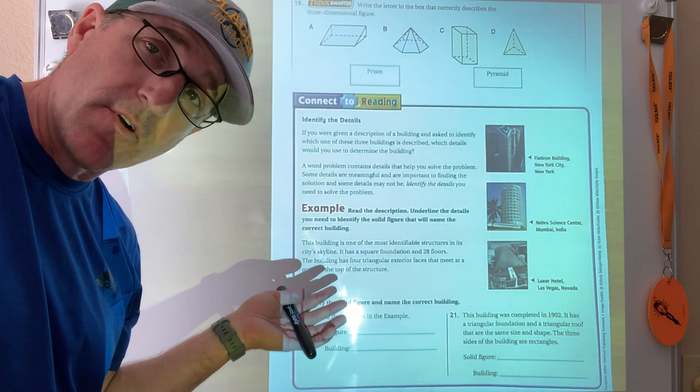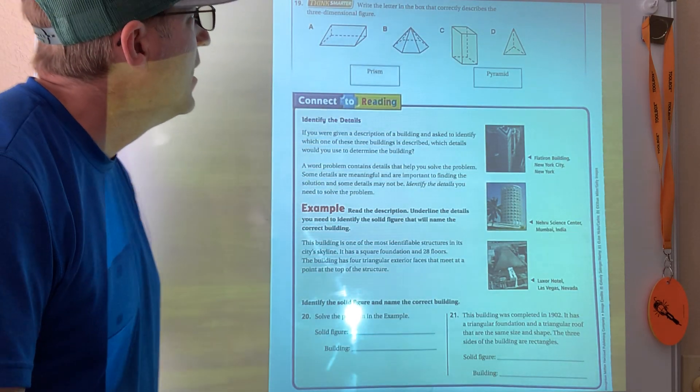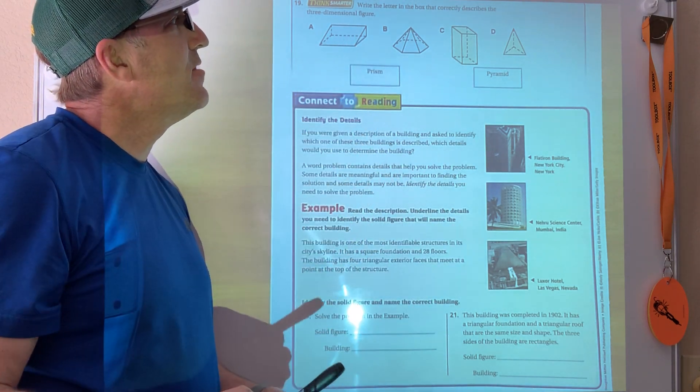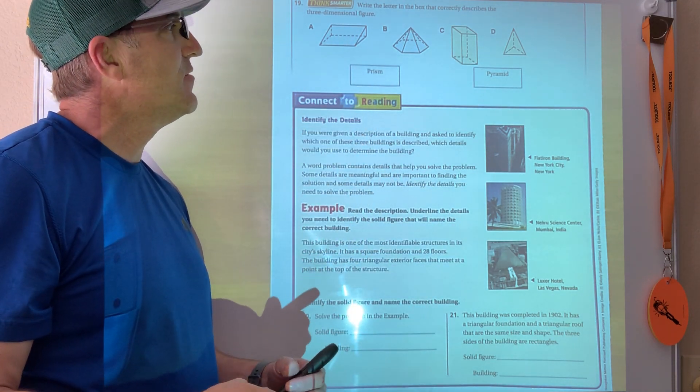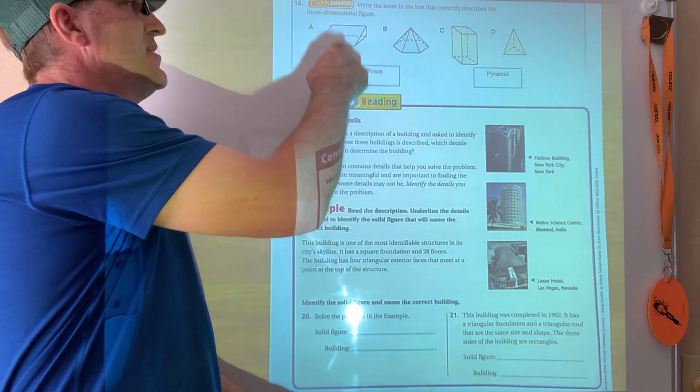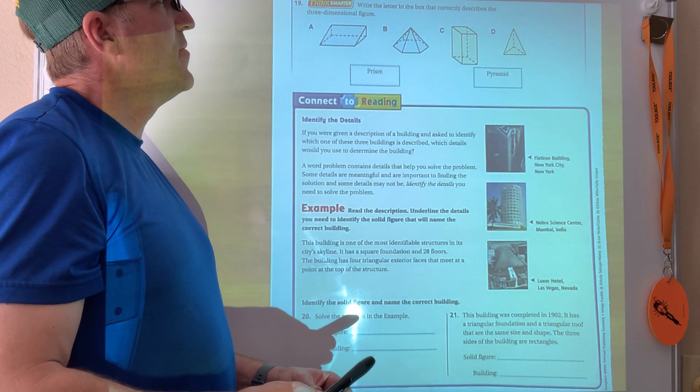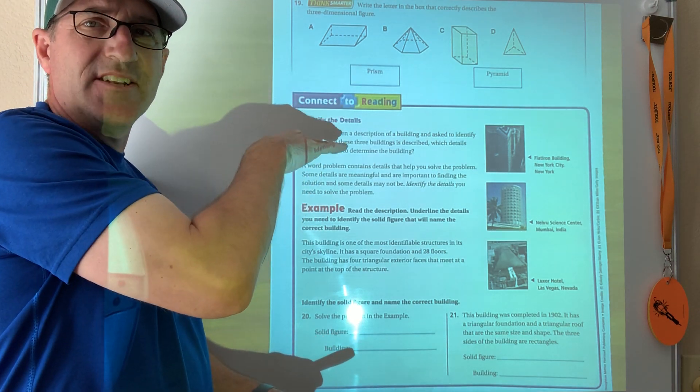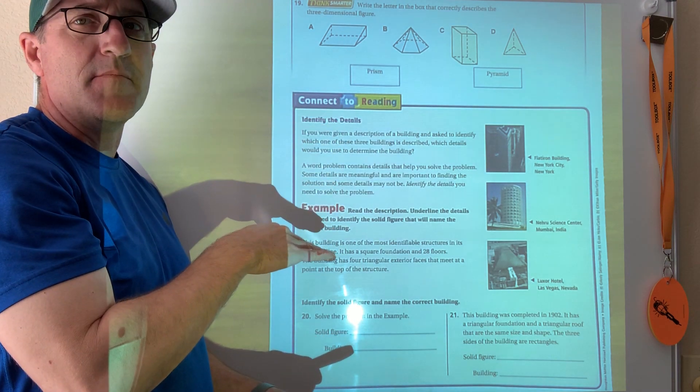Page four, last page before the homework. We're almost done. This is kind of cool right here actually. So write a letter in the box that correctly describes the three-dimensional figure. Again, you're going to see this shape a lot. Does it come to a point? No, it's like a little wedge, right? So wedges are not pyramids.